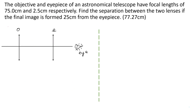The next example: an objective and eyepiece of an astronomical telescope have focal lengths of 75.0 centimeters and 2.5 centimeters respectively. Find the separation between the lenses if the final image is formed 25 centimeters from the eyepiece. The answer is 77.27 centimeters.